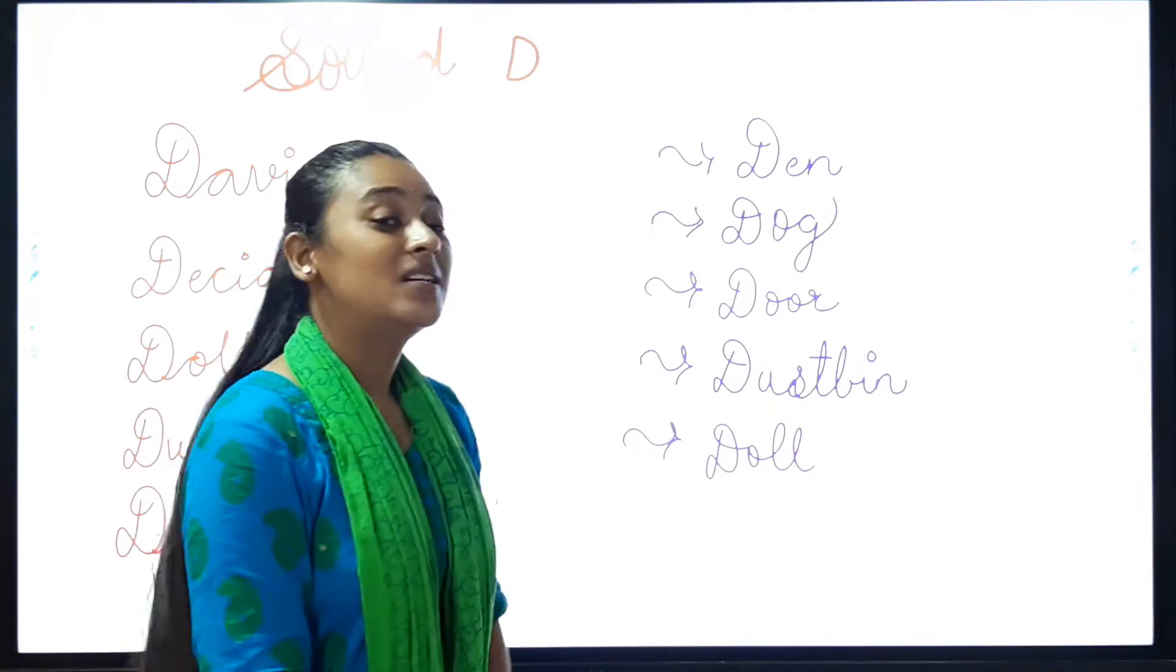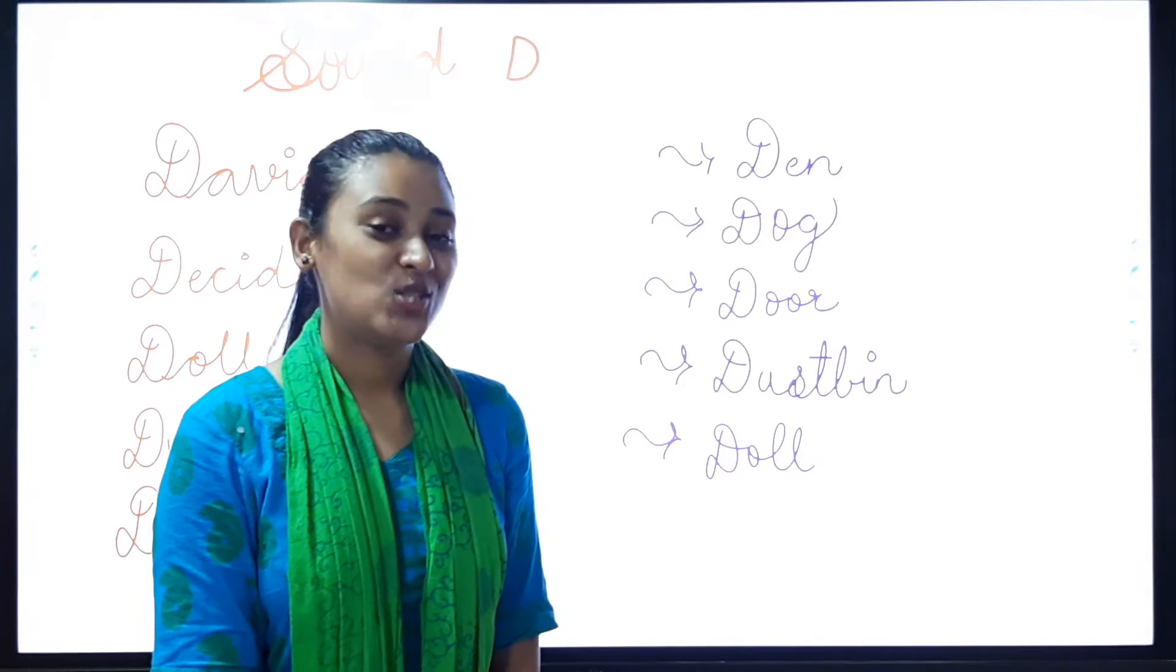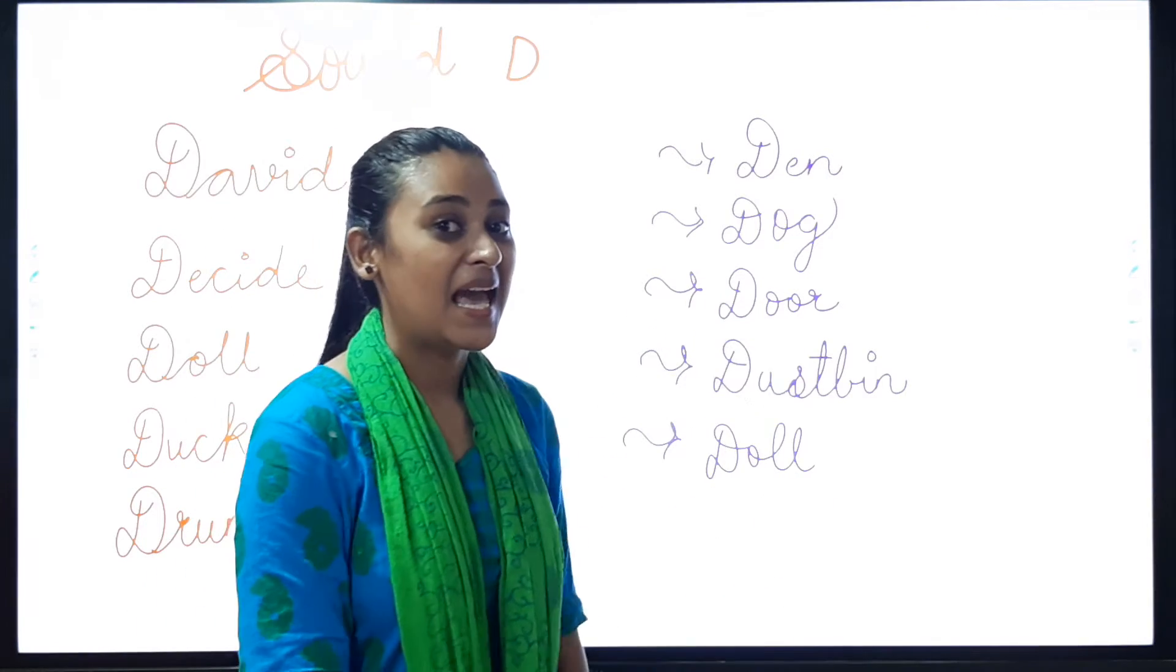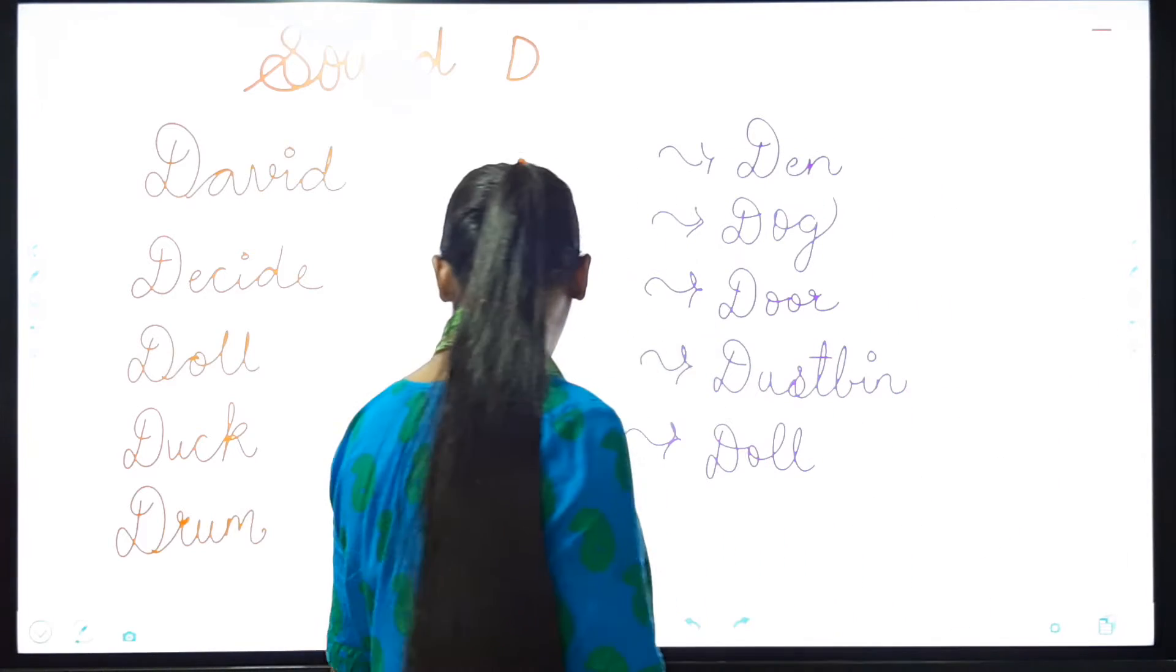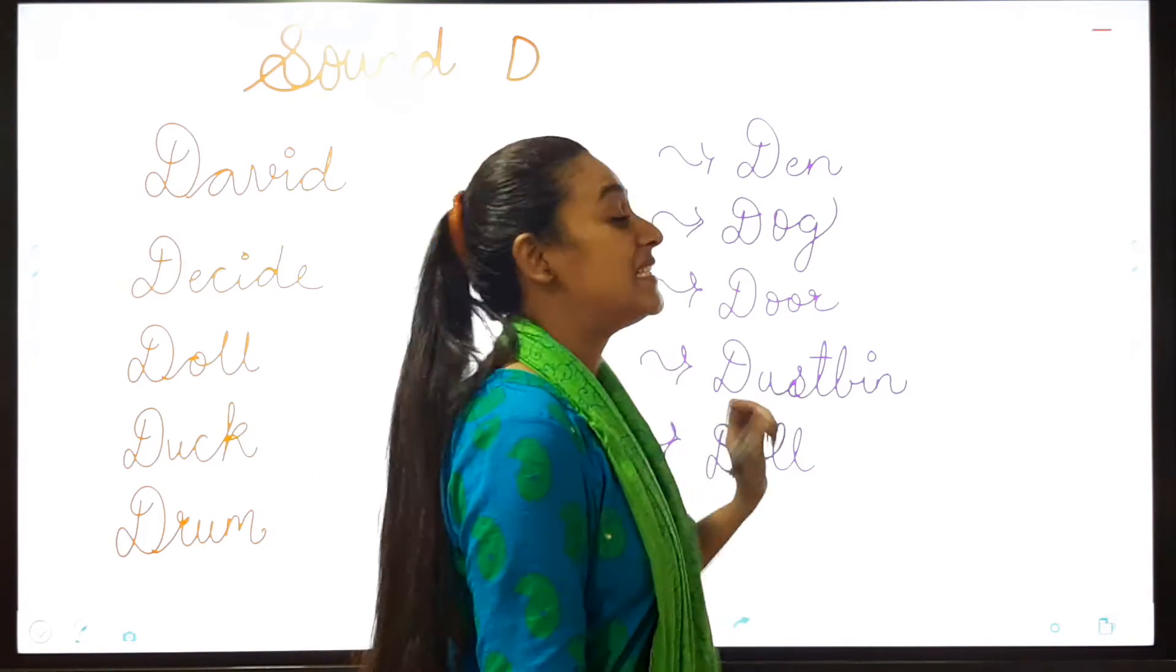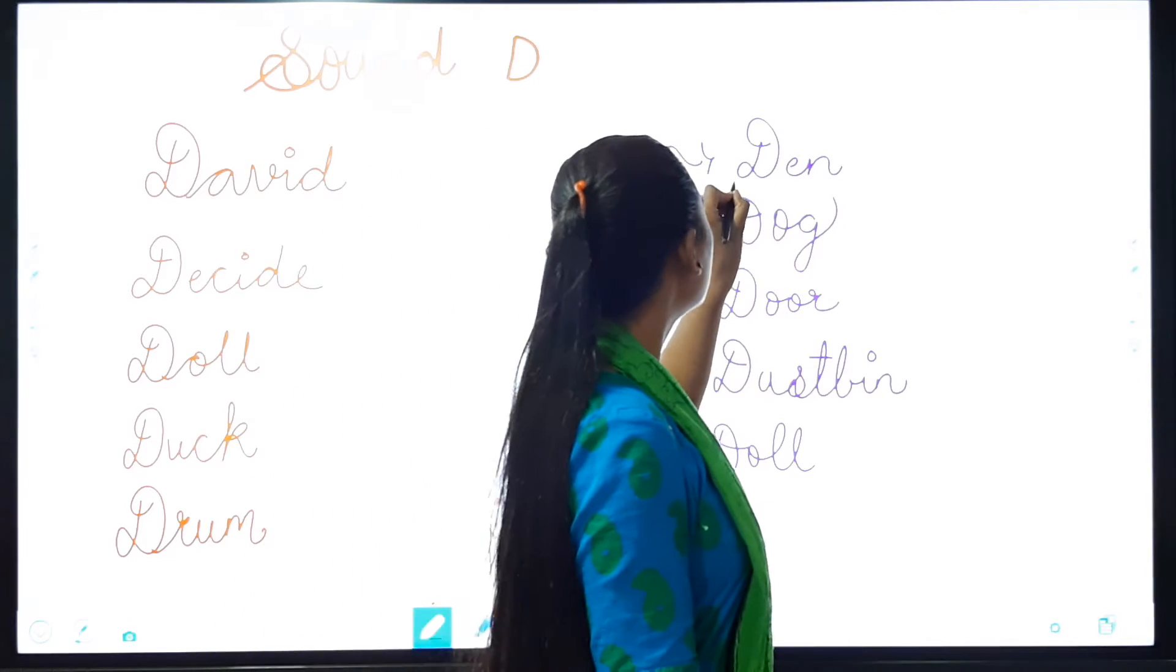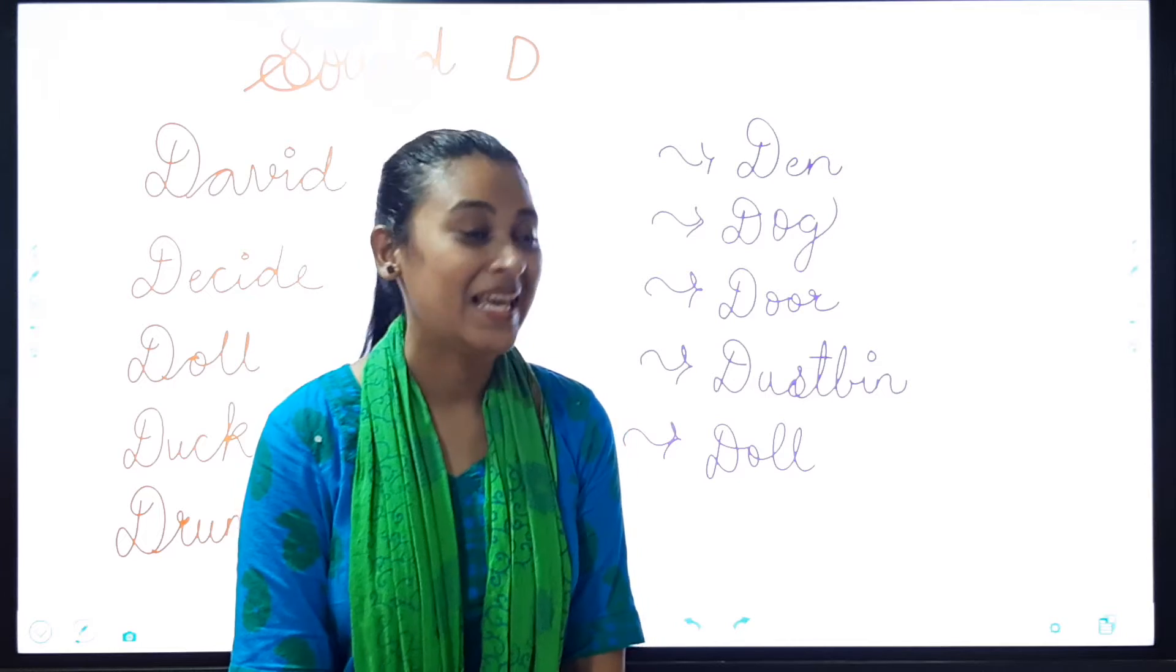So, abhi hum D se shuru hone waale words ko achhe se karenge. Hai na? Den. Kya hai? Den. Yes. Den. Iska starting sound kya hoga students? Yes. D toh? Den. Yes.